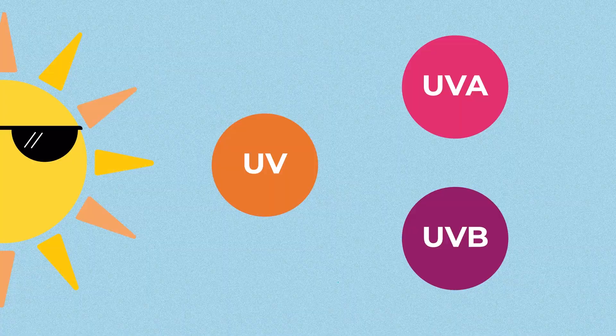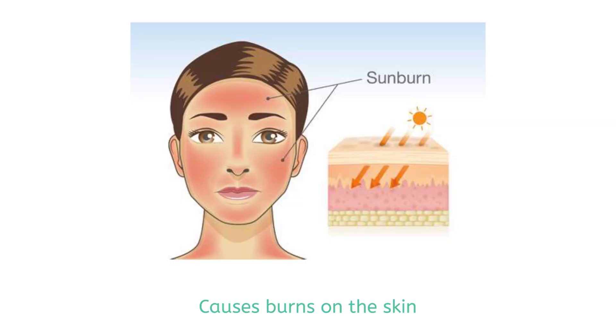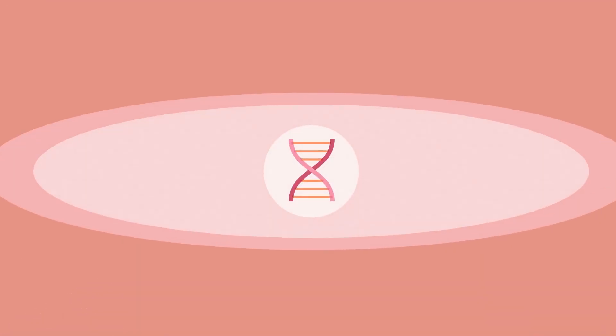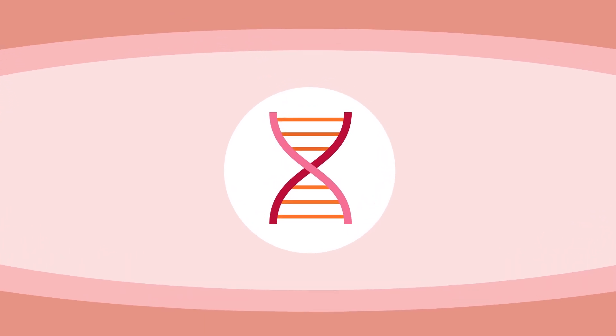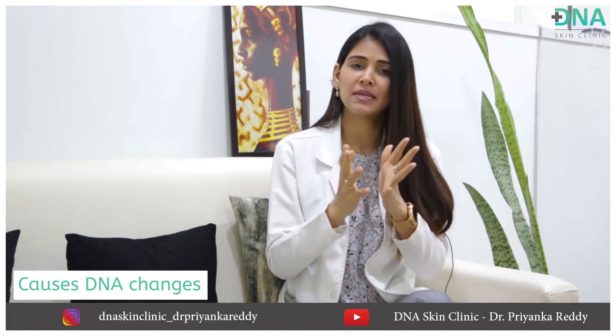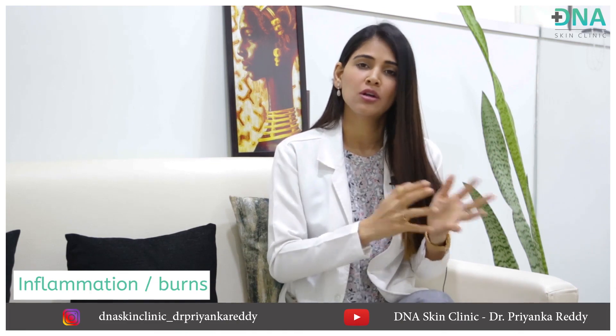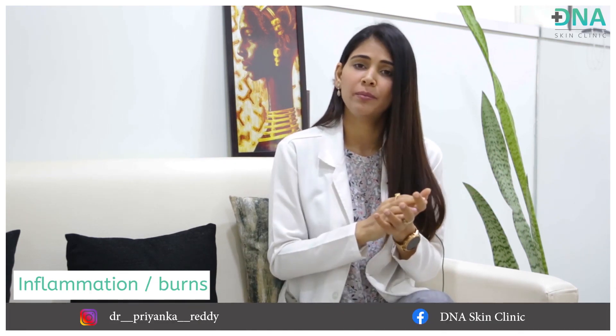UVB, or ultraviolet B radiation, is more harmful than UVA — it causes burns on the skin. UVB can penetrate only up to the superficial layers of the skin, but it interacts with the DNA of the skin and causes DNA changes, which result in inflammation and burns. When there is a lot of UVB damage and genetic mutations occur, that's when it can lead to cancers.